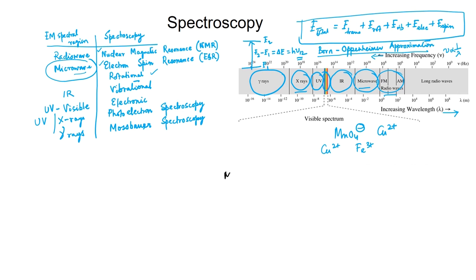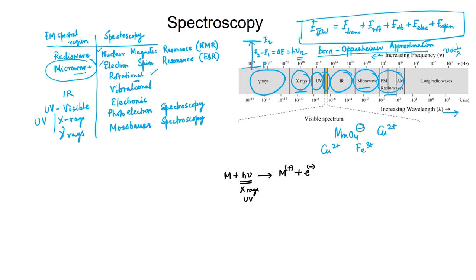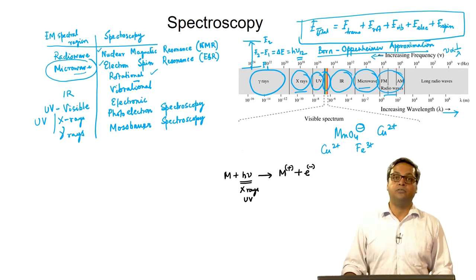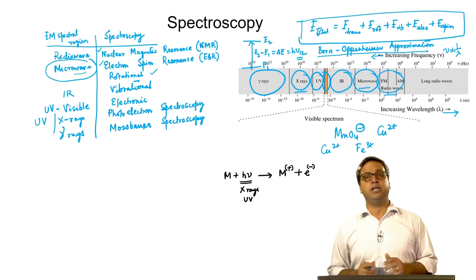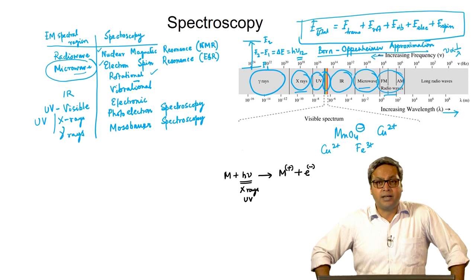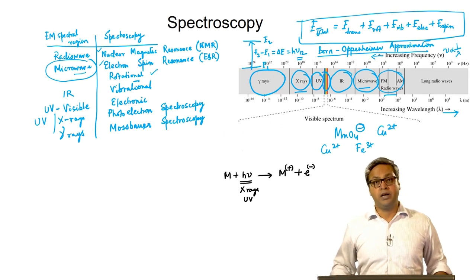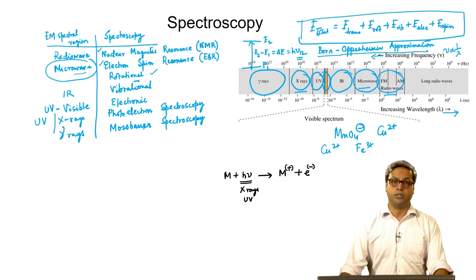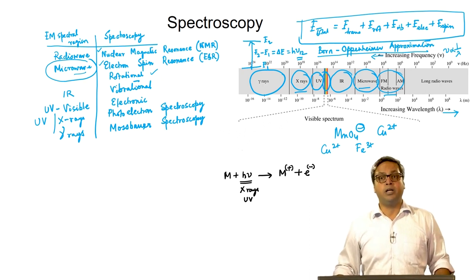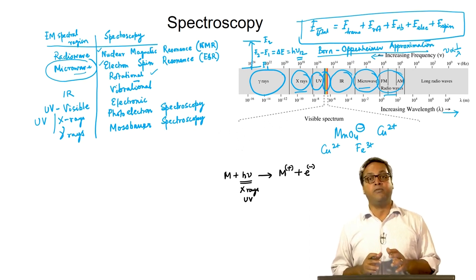If one shines X-rays or high-energy ultraviolet light on matter, the bound electrons in atoms or molecules may be knocked out and photoelectrons are formed: M + h·nu → M⁺ + e⁻. The ejected electrons have different kinetic energy values depending on how strongly bound the electron was. By studying the kinetic energy of ejected electrons, one gets an energy spectrum — this is commonly known as photoelectron spectroscopy, which provides information about the binding energy or ionization energy of electrons in a molecule.